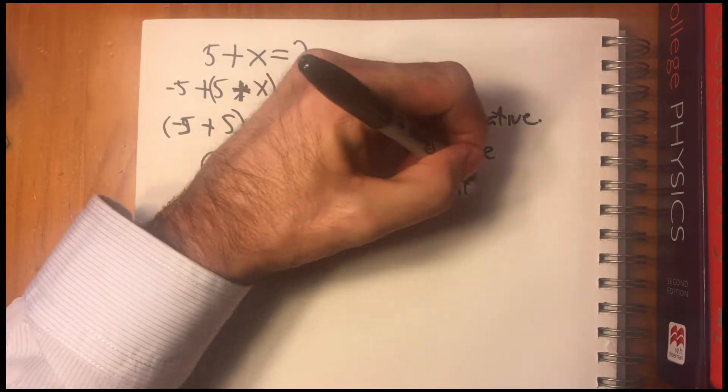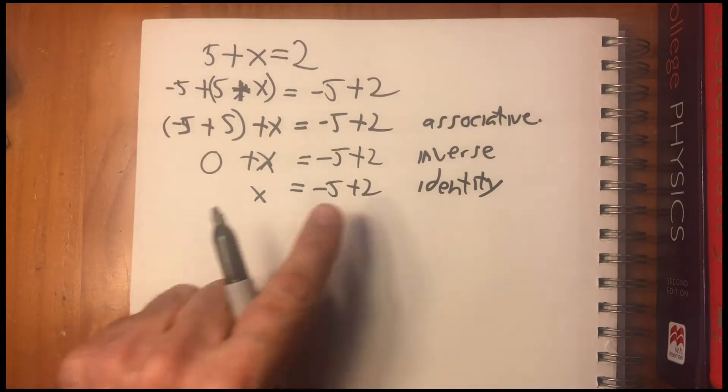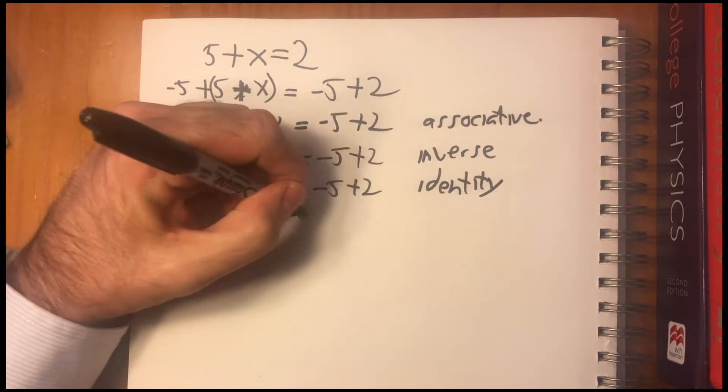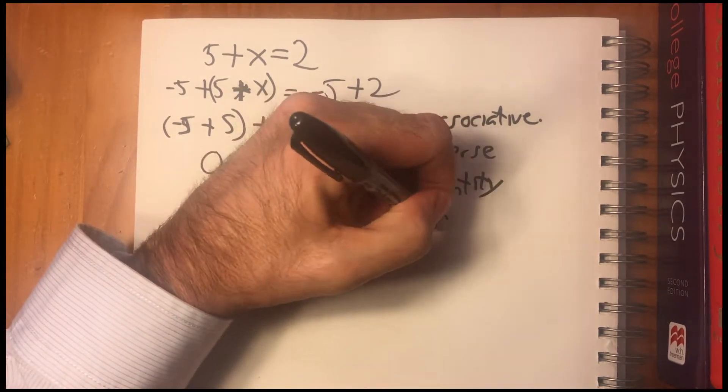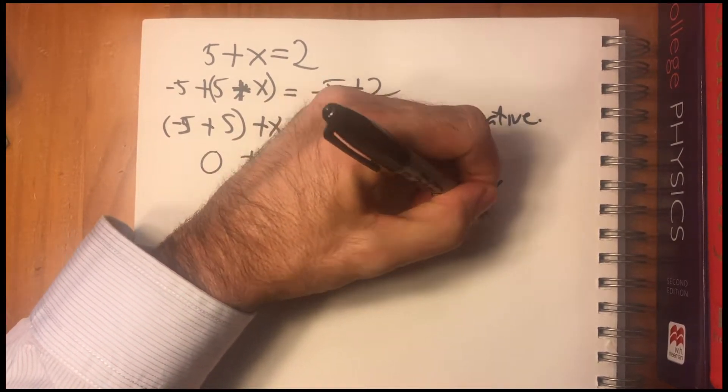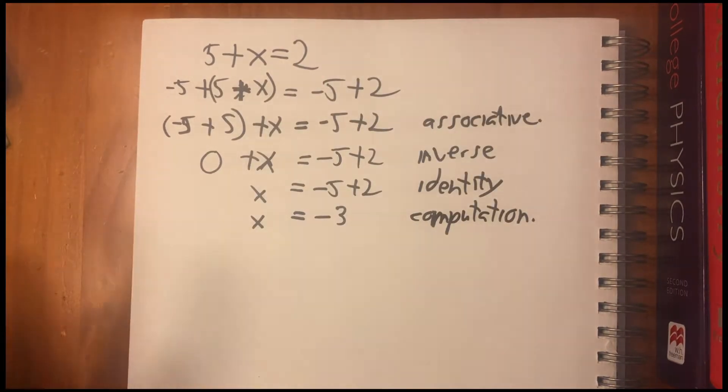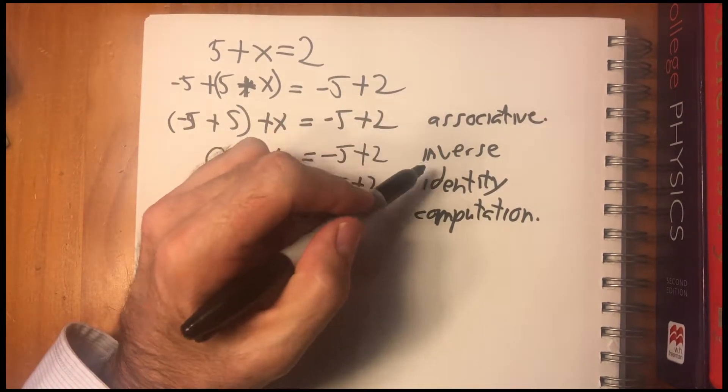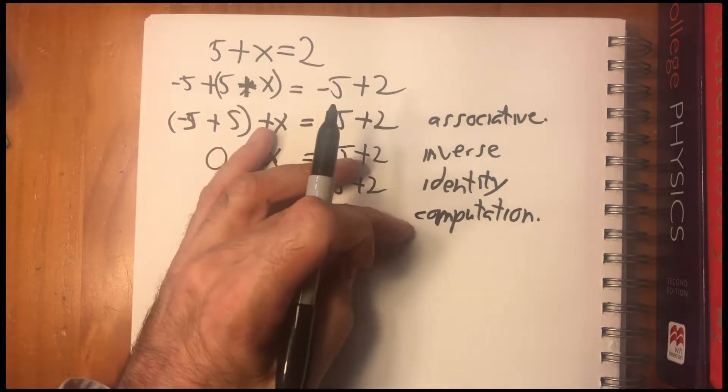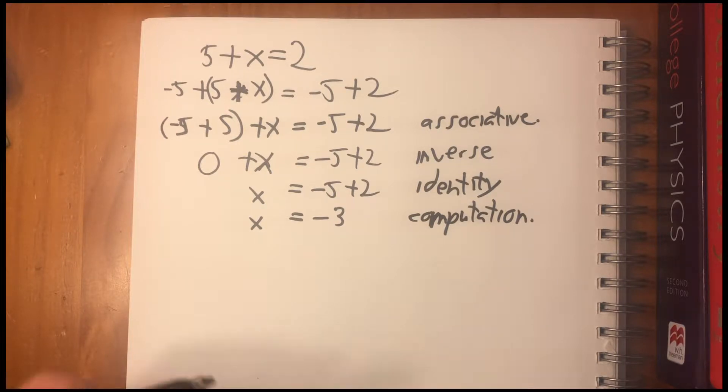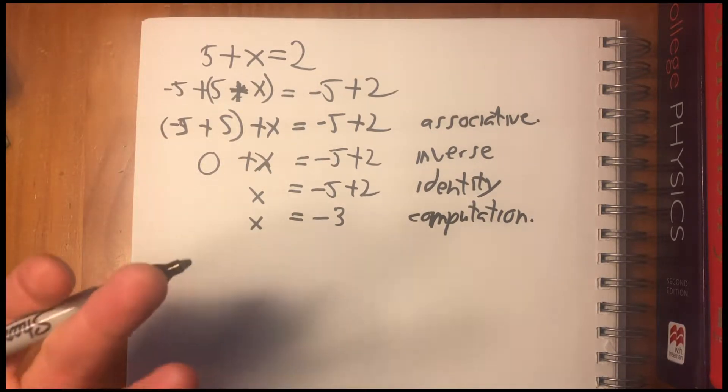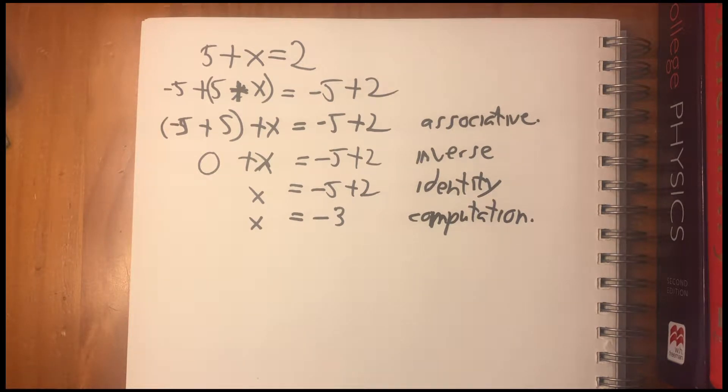And then zero plus any number is just itself. So we have x equals minus five plus two. That's the identity. And then finally just calculate what minus five plus two is. And we get that minus five equals... or that x equals minus three. Computation. Okay. This is what we all learned in grade school or junior high. And we even learned these axioms about the integers. What we were really doing was learning an example of abstract algebra.